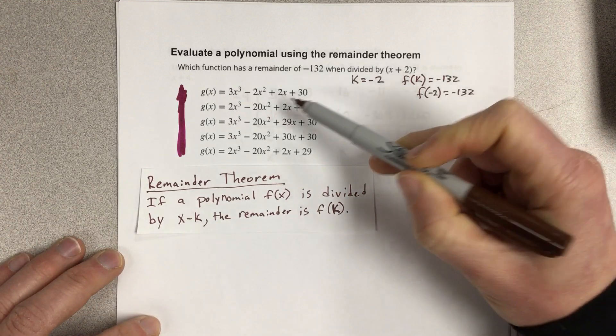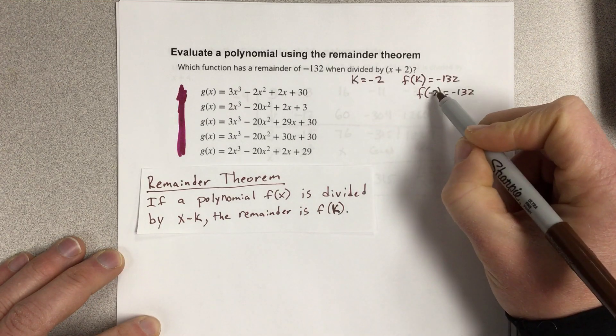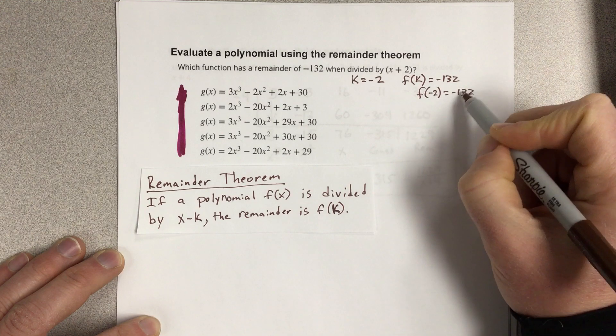So what I need to do is I need to check each of these functions to see if, when I plug in negative 2, I get negative 132.